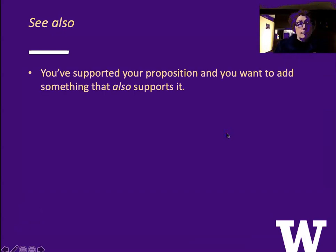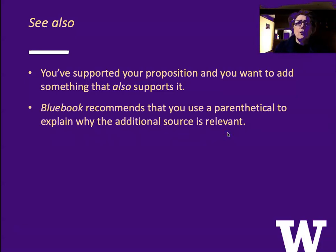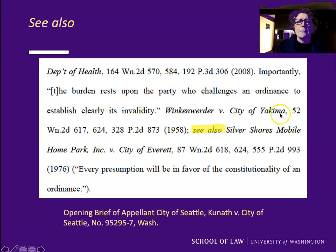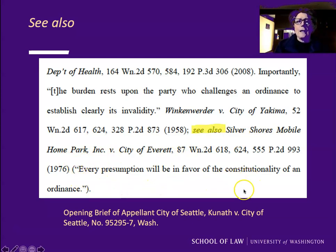'See also' means you've supported your proposition with at least one authority and you want to add something else that also supports it. The Bluebook recommends that you use a parenthetical to explain why the additional source is relevant. Here's an example: 'The burden rests upon the party who challenges an ordinance to establish clearly its invalidity. Winkenwerder v. City of Yakima.' Then the brief author says 'see also, Silver Shores Mobile Home Park,' with a parenthetical saying why the author is adding that see also.